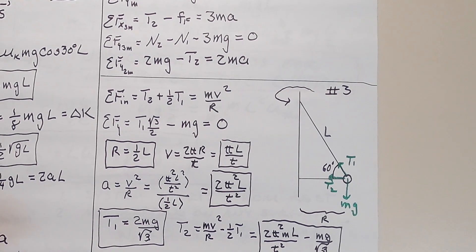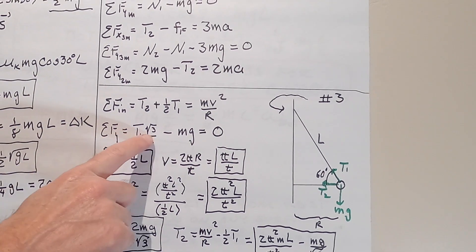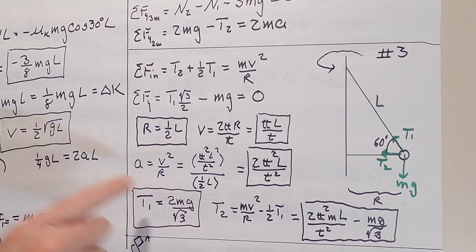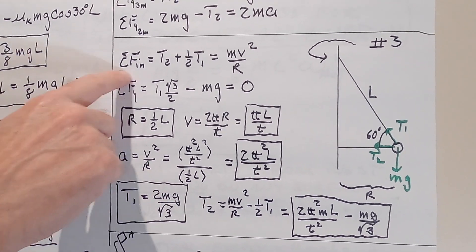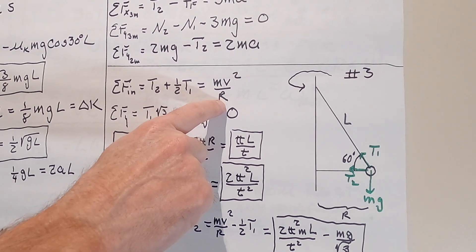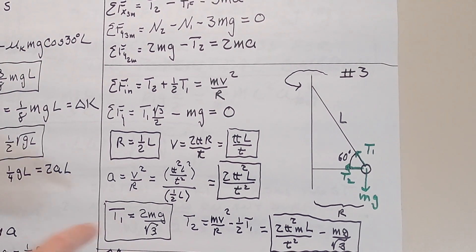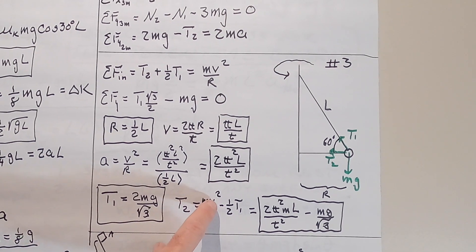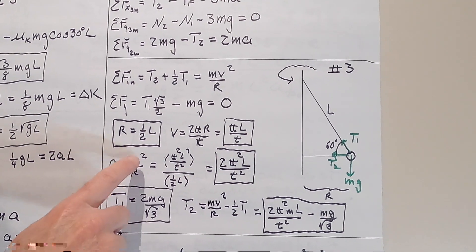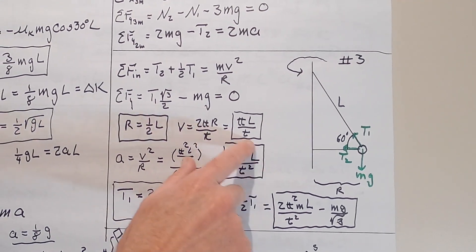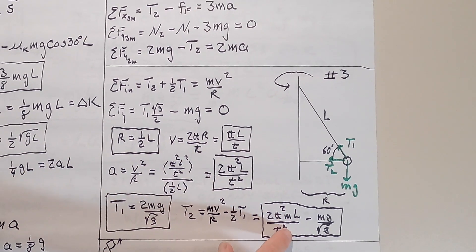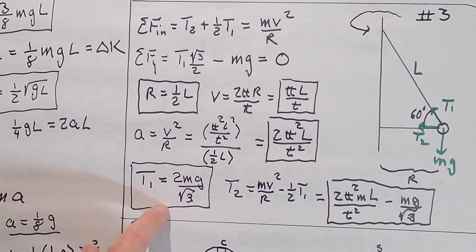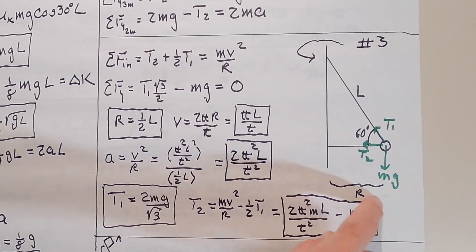What is the tension in each string? From the y equation we get T1 — it's just mg times 2 over the square root of 3. We take that T1, plug it into the radial equation. We know r and v, so we can calculate T2. T2 equals mv squared over r minus one half T1. Taking v squared over r and multiplying by m, then subtracting one half of T1, the halves and twos drop out, and you get mg over the square root of 3. So there's T2.